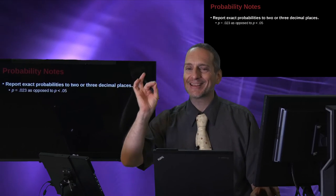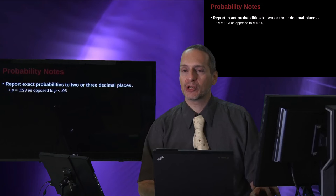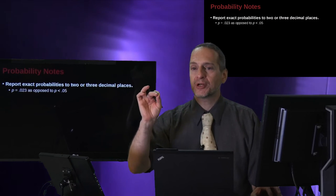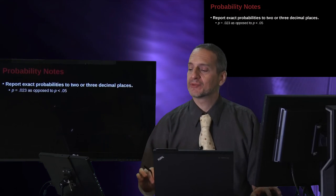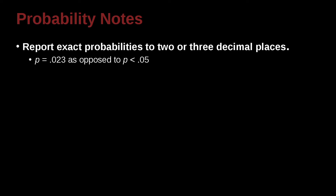But you know, that is not the way we should be reporting probability. We should be reporting it as the exact number. So APA recommends the exact number.